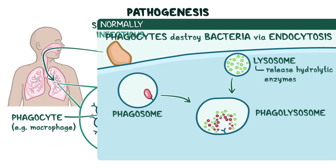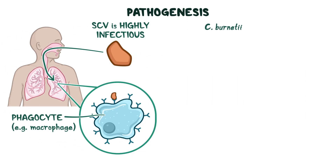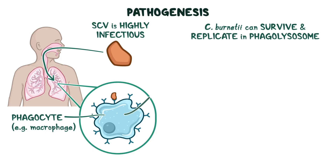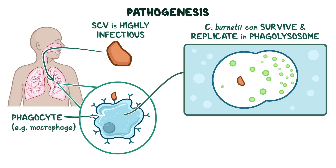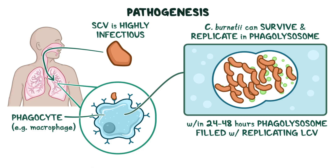But here's the thing: C. burnetii is unusual because, instead of being destroyed, it can modulate the process, allowing it to survive and even replicate in the acidic phagolysosome. The acidic environment triggers transformation of the SCV to the replicating LCV, and within 24 to 48 hours, the phagolysosome can be filled with replicating LCV forms. How C. burnetii both avoids destruction by the host's immune system and replicates so efficiently are still not fully understood.